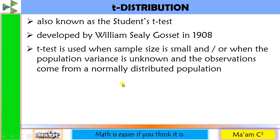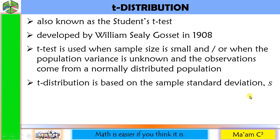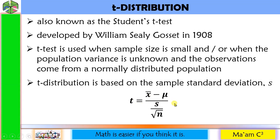T-test is used when the sample size is small and/or when the population variance is unknown, and the observations come from a normally distributed population. T-distribution is based on the sample standard deviation S, and the formula is: T equals the sample mean minus mu, all over the sample standard deviation divided by the square root of N.